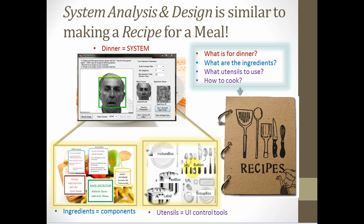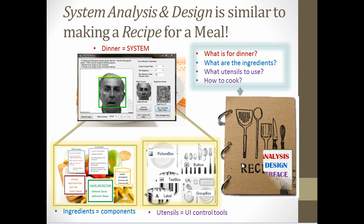Let's call our utensils the user interface controls — for example, the picture box, the button, text boxes, group boxes, and labels. We have decided what we want, what it's made of, what work it should do, and how it does it, which depends on the tools we're going to use. Your tools give you a way to interact with your system, and you also decide the layout of the tools. Once you have decided all of this, that is what we call system analysis and design — where design has two things: logical design, which is the working of the system, and user interface design, the tools and their layouts, as you see in this form.